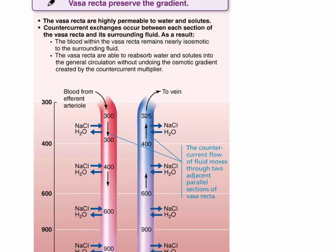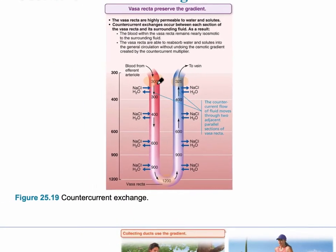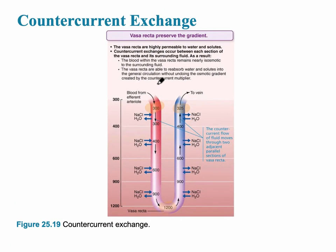Blood going from the efferent arteriole starts with an osmolality of 300 milliosmoles, and towards the bottom that quadruples to 1200 milliosmoles at the hairpin turn. Then the opposite occurs — by the time it reaches the vein, it's back to about 300–325 milliosmoles. The counter-current exchange refers to the vasa recta, while the counter-current multiplier refers to the renal tubule itself in the juxtamedullary nephron loop.